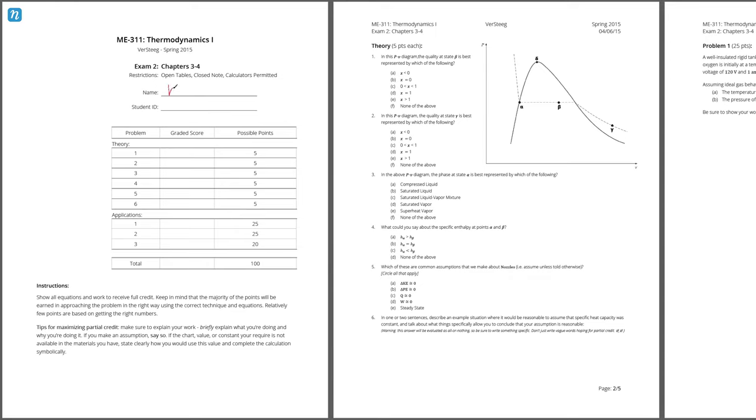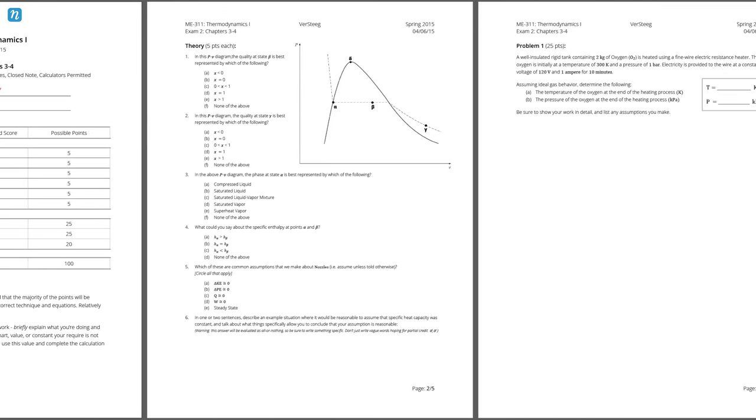This is the second exam from the spring 2015 semester of Thermo-1, and it covered chapters three to four from the Moran and Shapiro textbook. It was generally about evaluating properties and then analyzing some open as well as closed systems. 30% of the points came from multiple choice theory questions, five multiple choice questions, one short answer question. The remaining 70% of the points came from three workout problems.